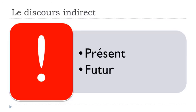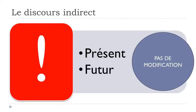So the rule is: if the verb that introduces the discours indirect structure is at the present form or the future form, then the good news is that you won't have to modify anything after it. You don't modify the verb in the second part — quite good news!